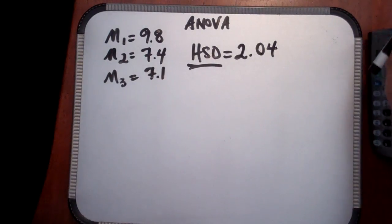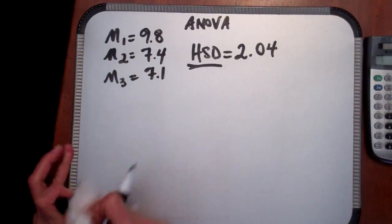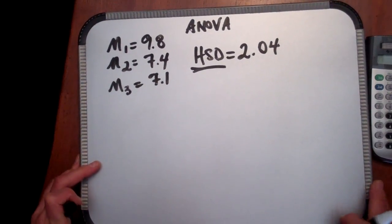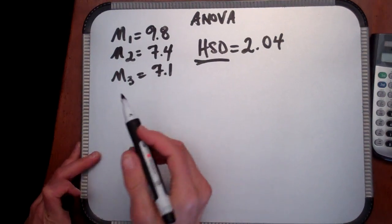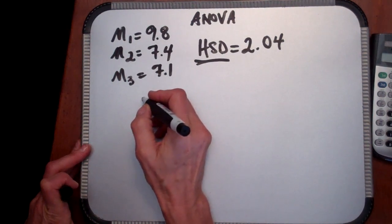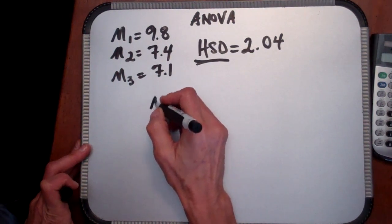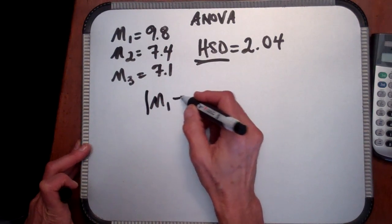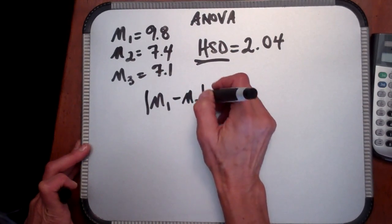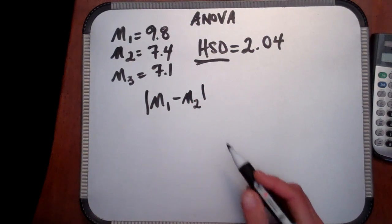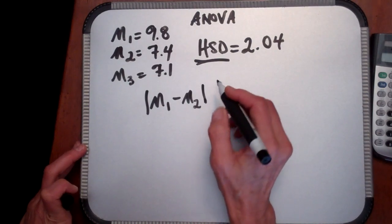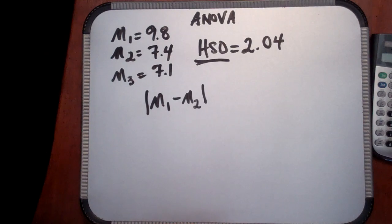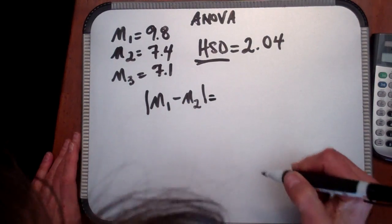Okay, HSD is 2.04. Now we're going to use this honestly significant difference to evaluate the differences between group pairs. So let's start with our first comparison. First we're going to compare the mean of group 1, which we remember was our high-dose group, to the mean of group 2. And here we're using our vertical bars to indicate absolute difference. So if it happened that these numbers were reversed and you end up with a negative number, it doesn't matter. We're just interested in the absolute difference.